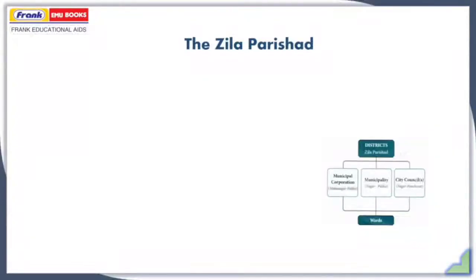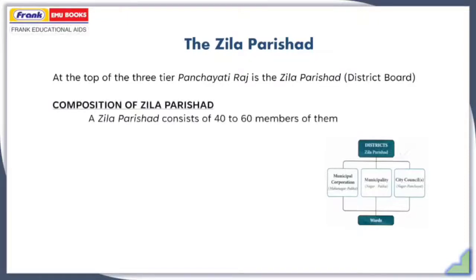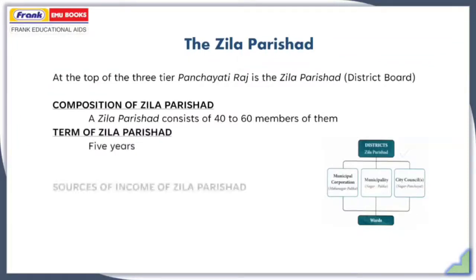At the top of the three-tier Panchayati Raj is the Zilla Parishad. Panchayati Raj has three tiers: Gram Panchayat at the village level, Panchayat Samiti at the block level, and Zilla Parishad at the district level. The Zilla Parishad comprises 40 to 60 members, and its term is usually 5 years.